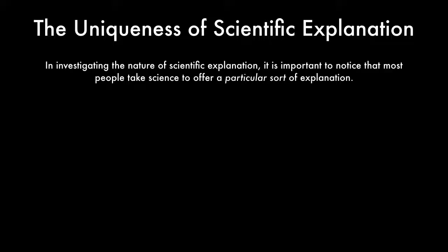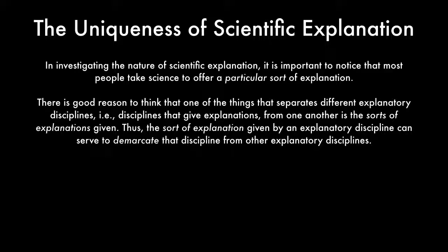In investigating the nature of scientific explanation, it's important to notice that most people take science to offer a particular sort of explanation. There's good reason to think that one of the things that separates different explanatory disciplines — disciplines that give explanations from one another — is the sorts of explanations that they give. Thus, the sort of explanation given by an explanatory discipline can serve to demarcate that discipline from other explanatory disciplines.